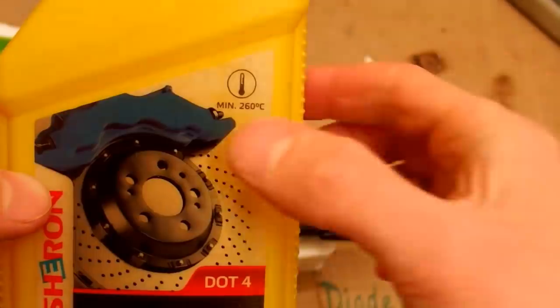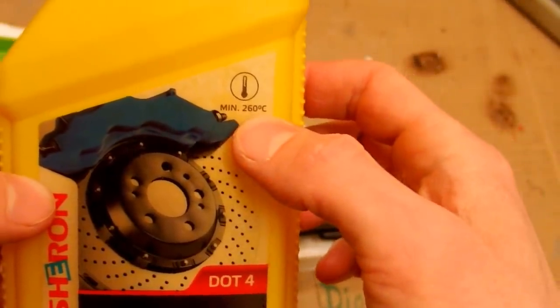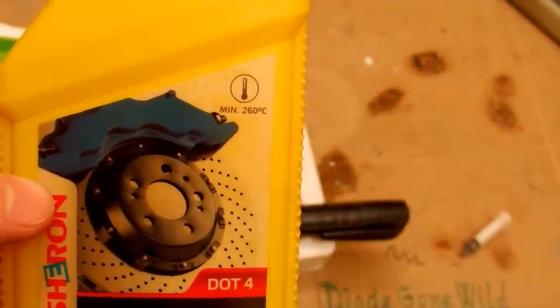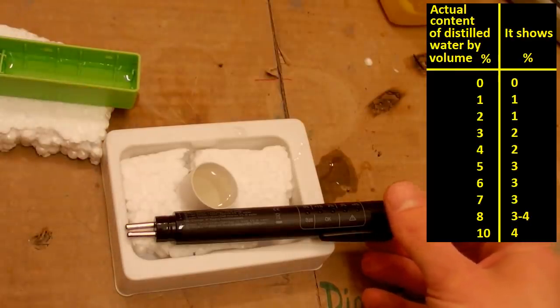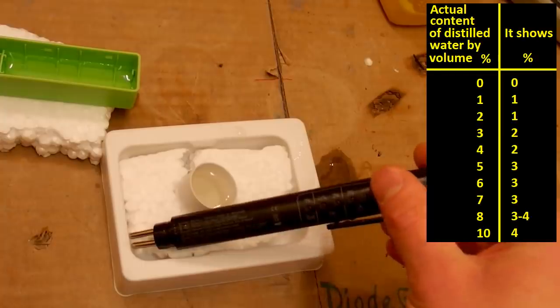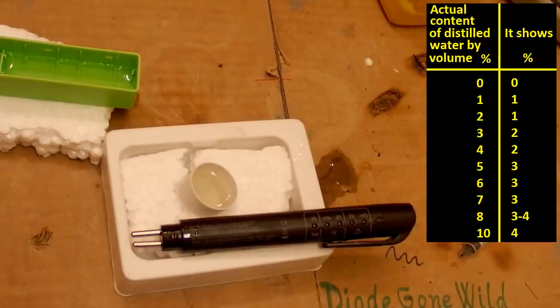And here you can see the boiling point of the brake fluid, which is quite high, two hundred sixty degrees Celsius. It seems to be a nice indicator but the actual water content can be almost double of what it reads. So be aware of it.